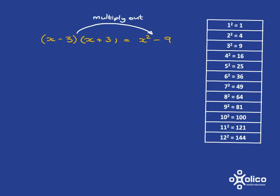But we could start with x squared minus 9 and then be asked to work it back to this form. And when we do that, we talk about that we are factorising.